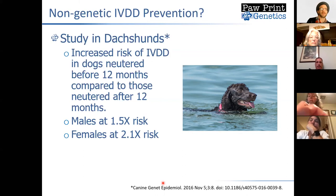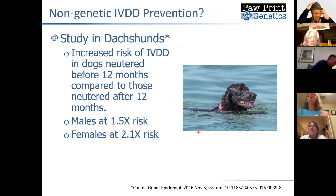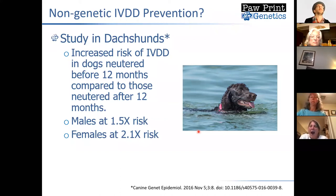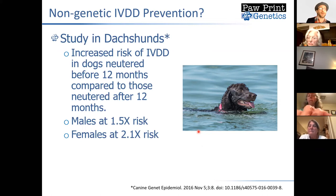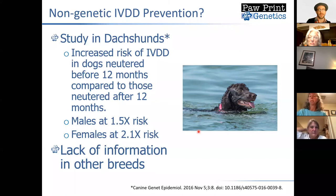In a dachshund study, males neutered before 12 months had about a 1.5 times greater risk of IVDD compared to those neutered after. Females had about a 2.1 times greater risk if spayed before a year. There's really a lot of lack of information in other breeds, but at least in some breeds, and perhaps even most breeds, this might end up being found true at some point.